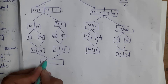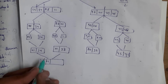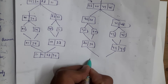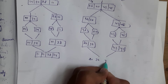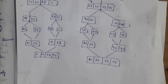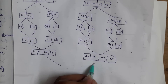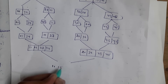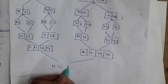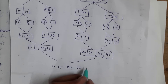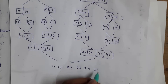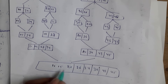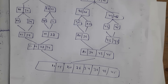Then combining the pairs: 11, 15, 28, 34 on one side, and 20, 36, 43, 45 on the other. At last, we merge all four elements: 11, 15, 20, 28, 34, 36, 43, 45. This is the final sorted output. This is how we do sorting using merge sort.